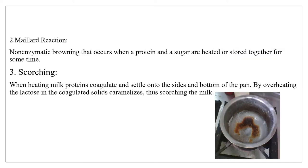A mild reaction also takes place, which is non-enzymatic browning. That occurs when a protein and a sugar are heated or stored together for a longer period of time. You can see browning in which there is no enzyme involved. When heating, milk protein circulates and settles on the sides and bottom of the pan. This is known as scorching. By overheating, the lactose in the coagulated solid caramelizes and causes scorching. You can see here in the picture how scorching occurs.